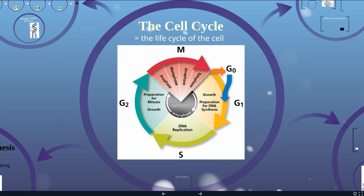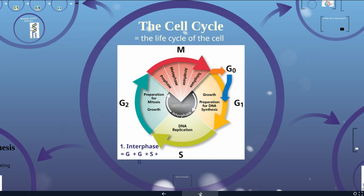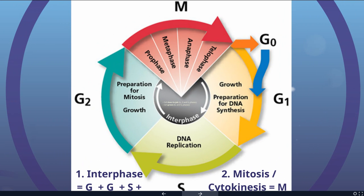Just like an organism is born, grows, and dies, cells are going to go through the same process. The cell cycle has two main parts: interphase, which includes G1, S phase, and G2, and then mitosis and cytokinesis, which is this portion of the life cycle. Interphase is 75% of the life cycle, and mitosis is the last 25%.